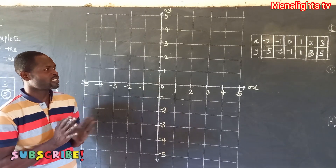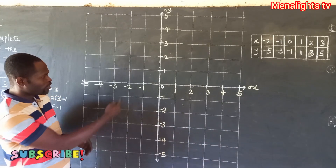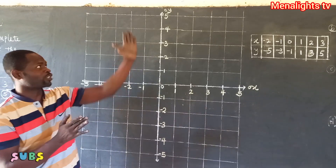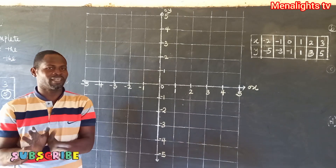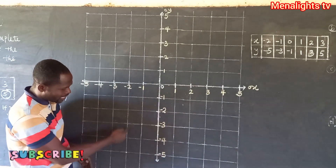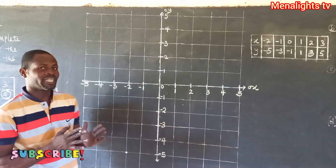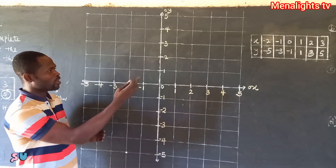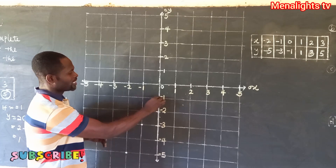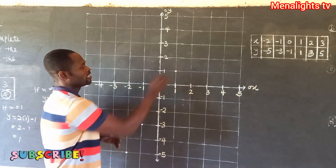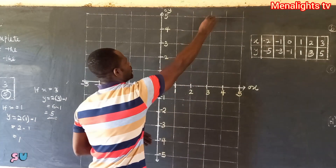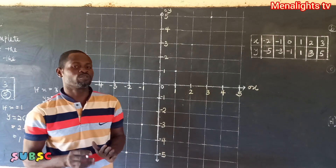We are now going to plot the ordered pairs. The x-axis goes left to right and the y-axis goes top to bottom. The first number is always for the x-axis and the second for the y-axis. Our points are: (-2, -5), (-1, -3), (0, -1), (1, 1), (2, 3), and (3, 5). We now join the points to form a straight line.